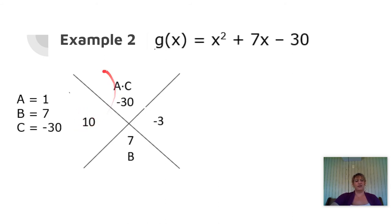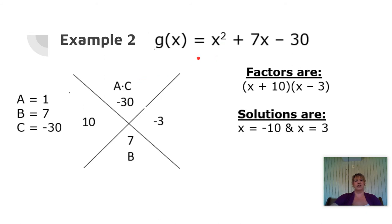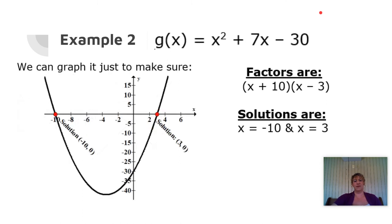Again, a is 1, so I don't have to divide it out. I can write my factors as x plus 10 times x minus 3. Our solutions just change the signs from there: on the side piece we have positive 10, which means our solution becomes negative 10, and the other side piece was negative 3, which means it becomes positive 3. The graph shows it crossing the x-axis at negative 10 and at 3.